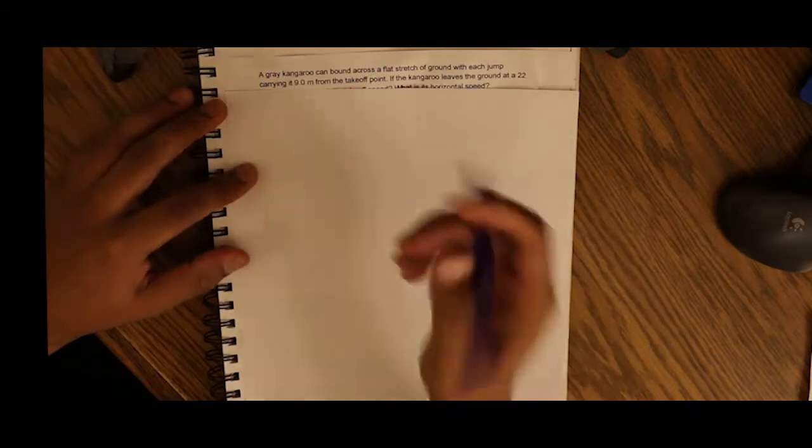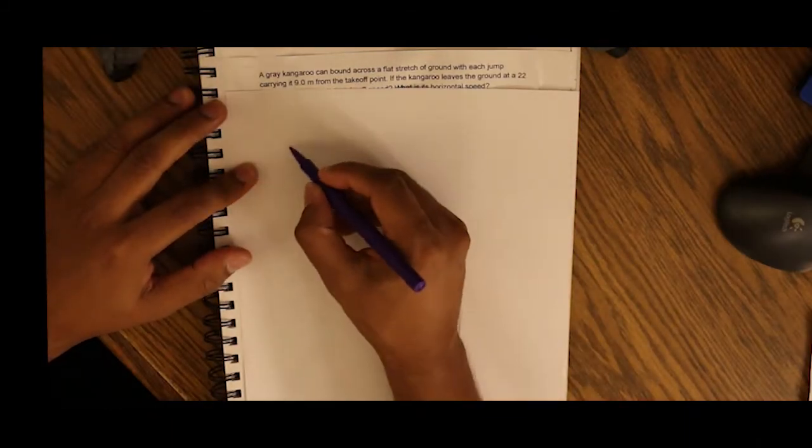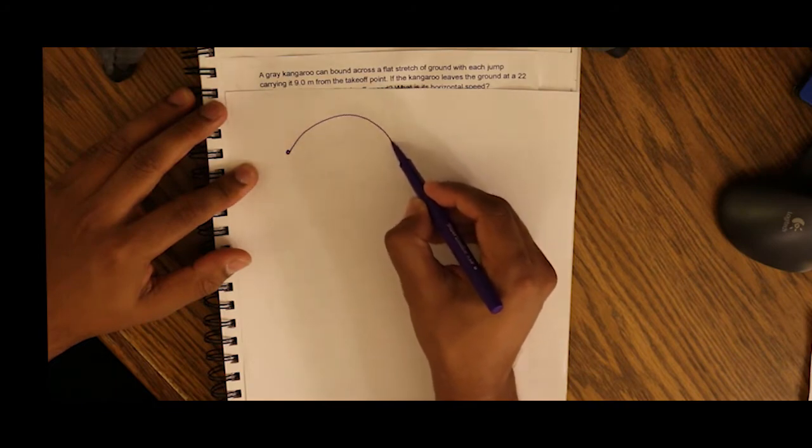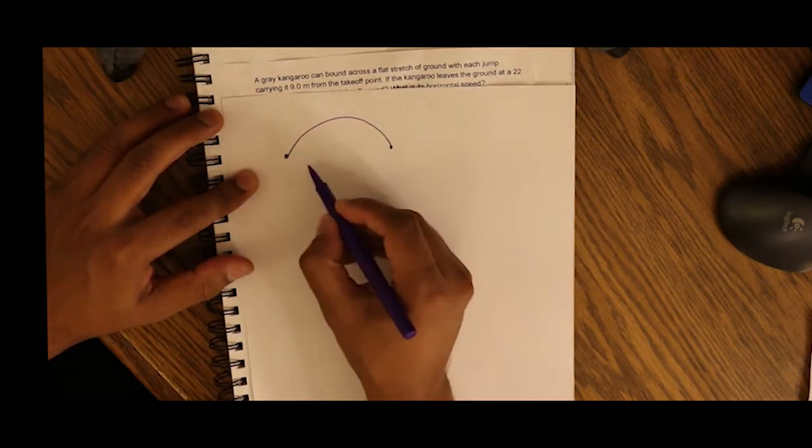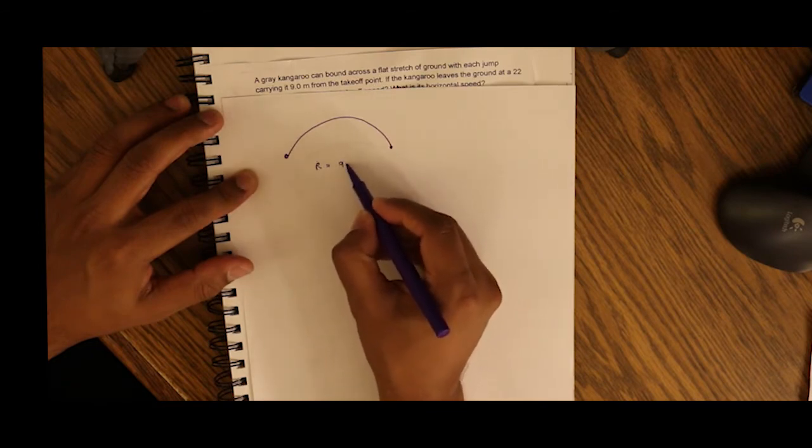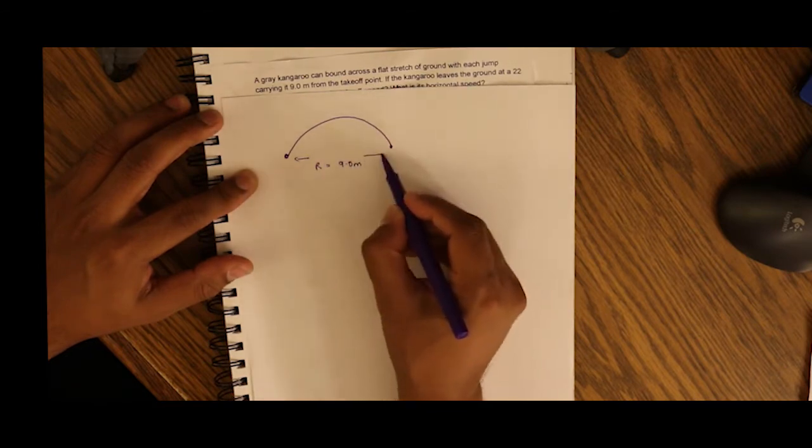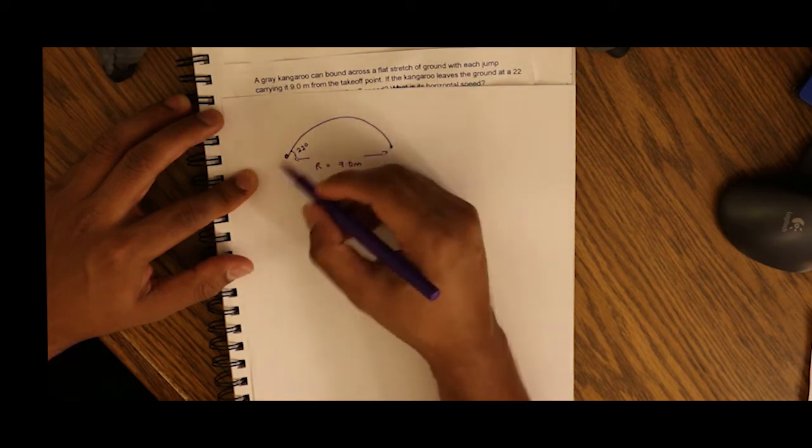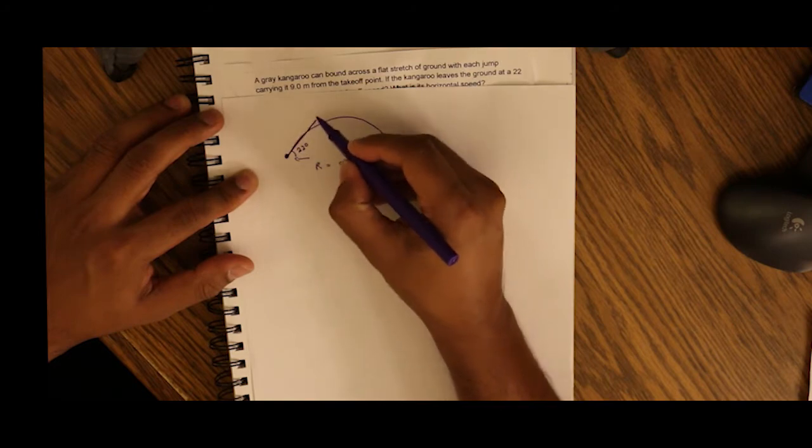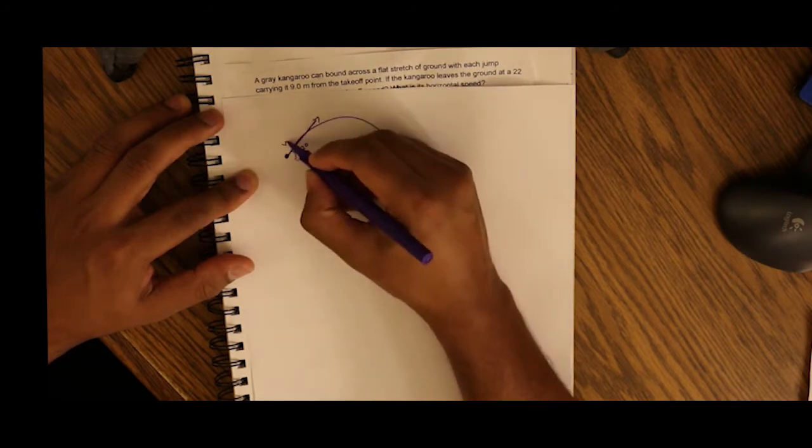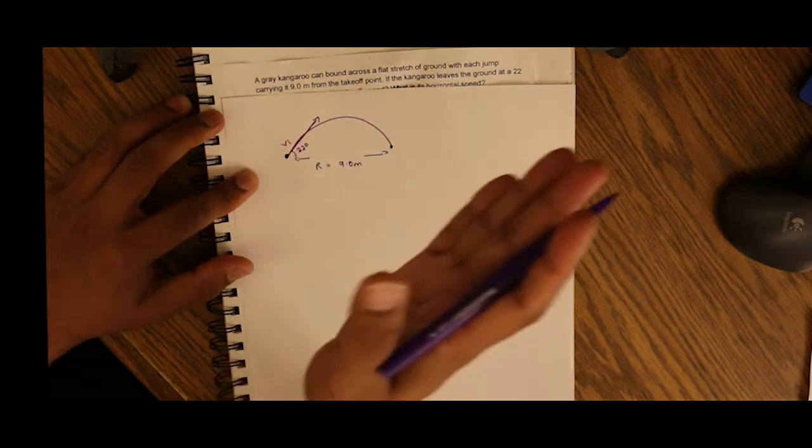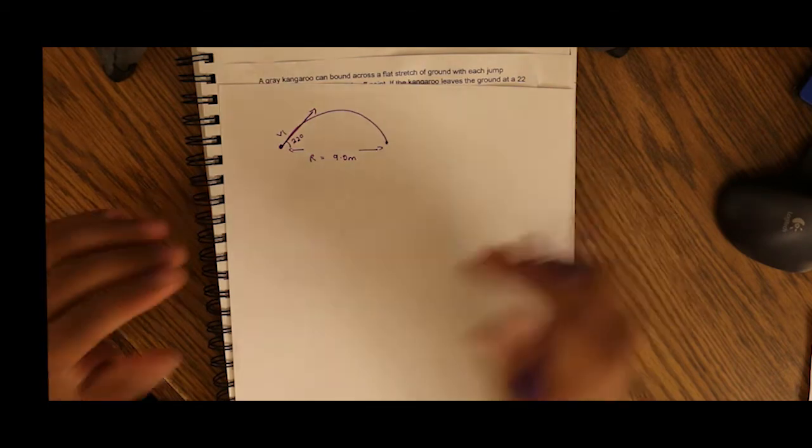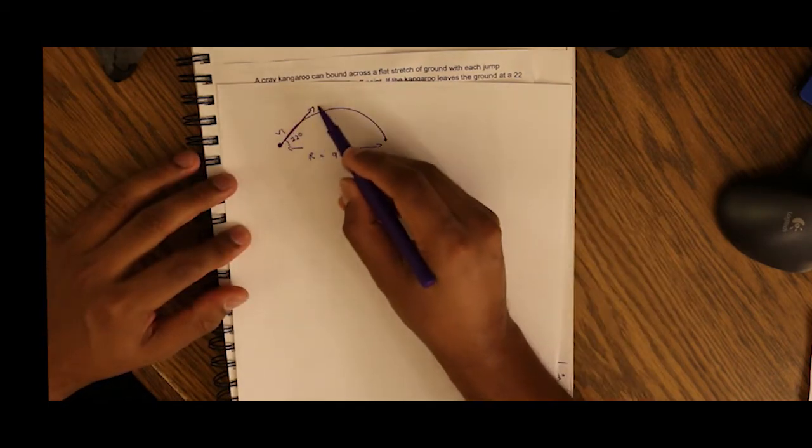With this question we have a kangaroo represented by this dot here jumping off the ground and landing back, and the range of its jump is approximately nine meters as given to us in the question. The angle of its takeoff is 22 degrees. We have to find out what is this velocity initial going in this direction, which is not necessarily in the horizontal plane and not necessarily in the vertical plane. It's a vector that's going in this direction.